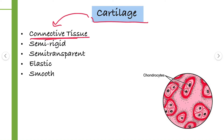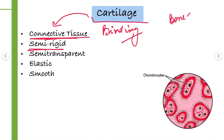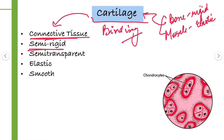Cartilage is a connective tissue — as the name suggests, something related to connection. So cartilage performs the work of binding different structures, tissues, and organs. It is semi-rigid in nature — it is not properly rigid, nor properly elastic. For example, bone is properly rigid, and muscle is properly elastic. So cartilage falls in between the two: it is semi-rigid.